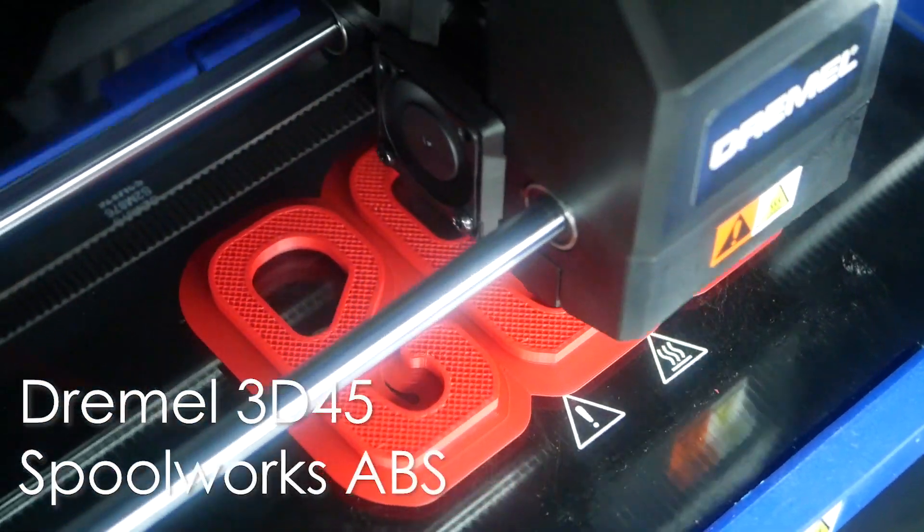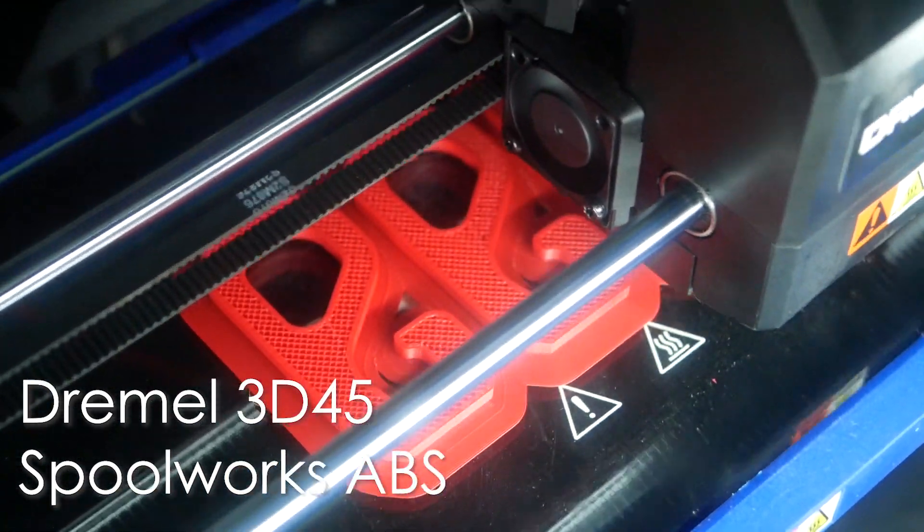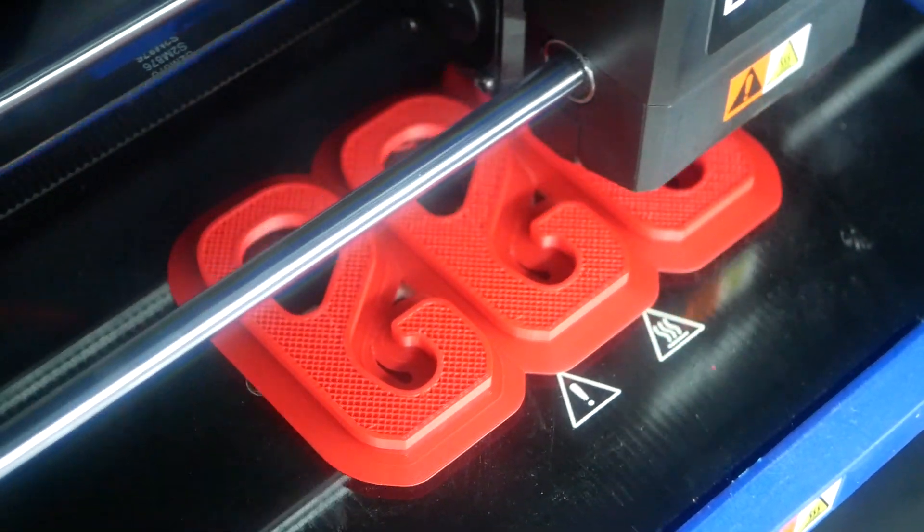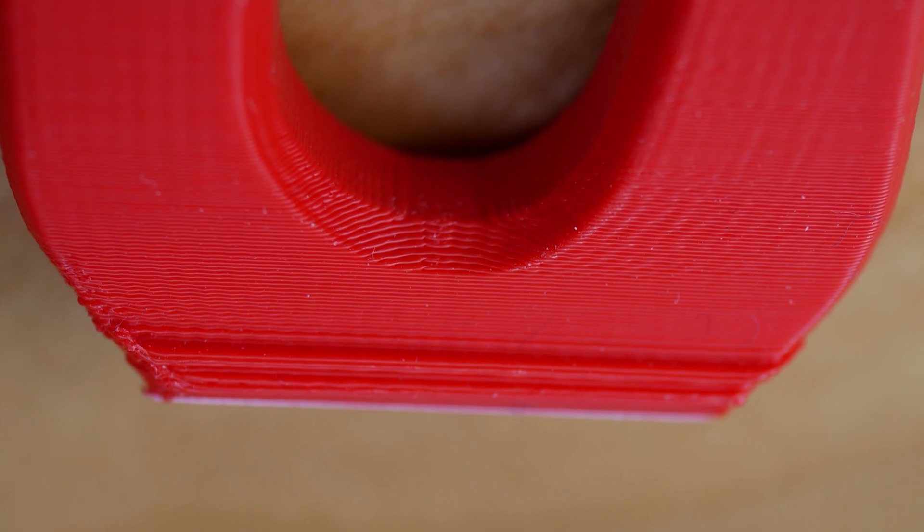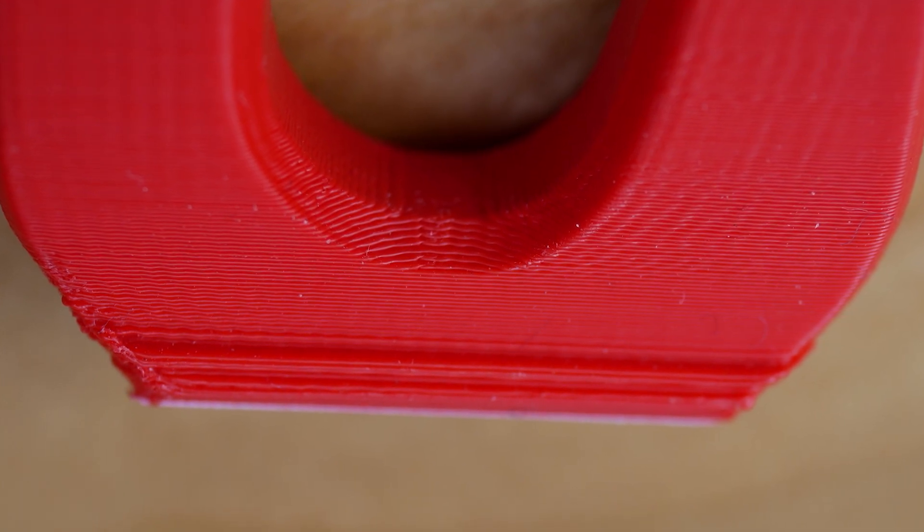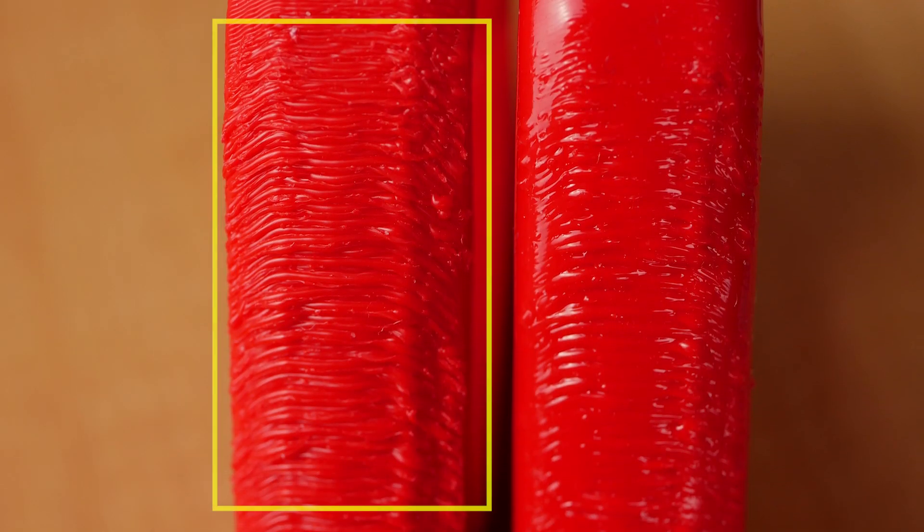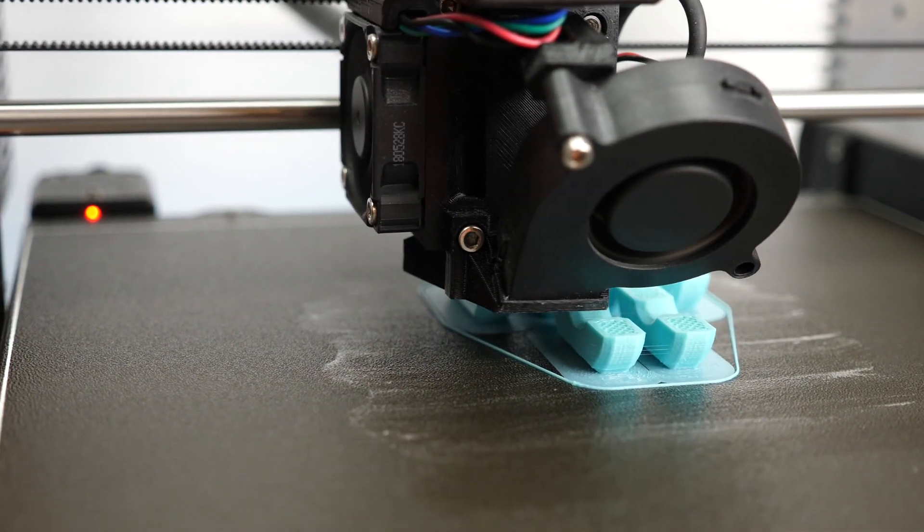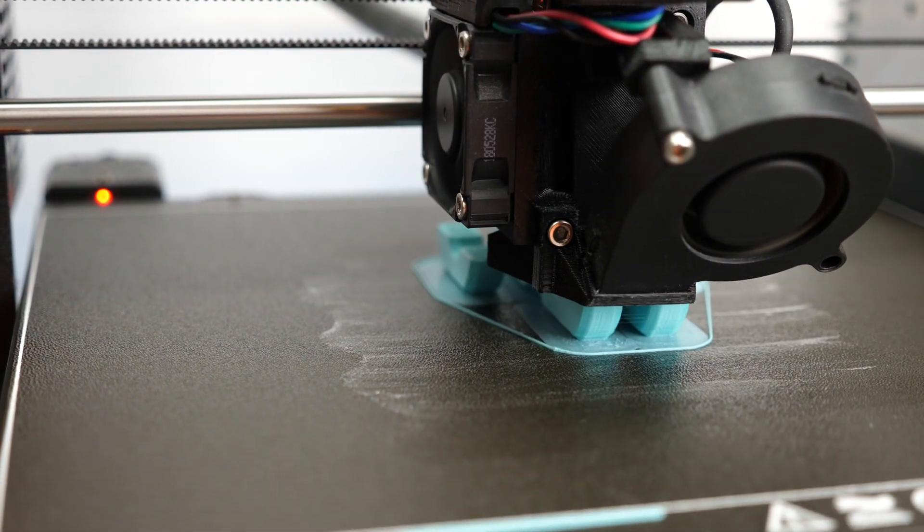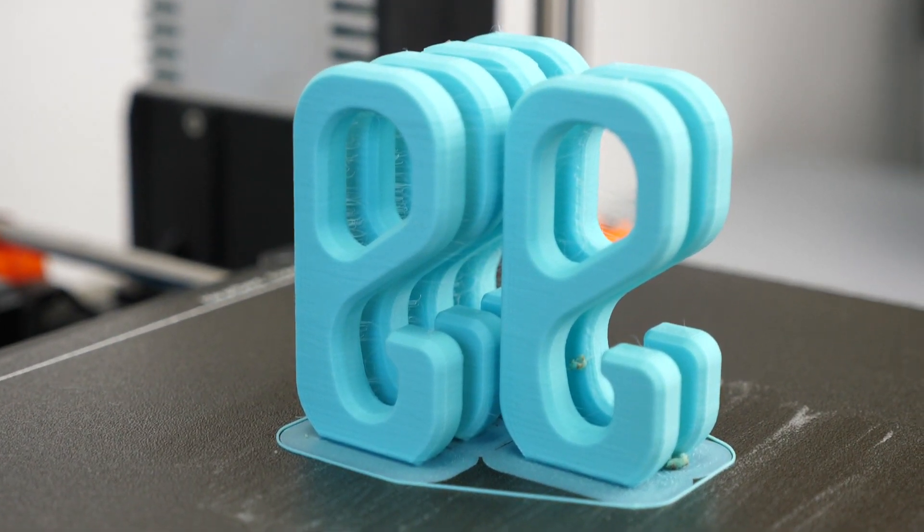The ABS parts were printed on the enclosed Dremel 3D45 in Spoolworks ABS. The parts somehow showed a slight layer shift right at the bottom but I still kept them since that shouldn't influence the tests later. Printing quality in general was okay, only the overhangs didn't look perfect. The polysmooth parts were printed on the original Prusa i3 Mark II S and came out great except for some stringing.